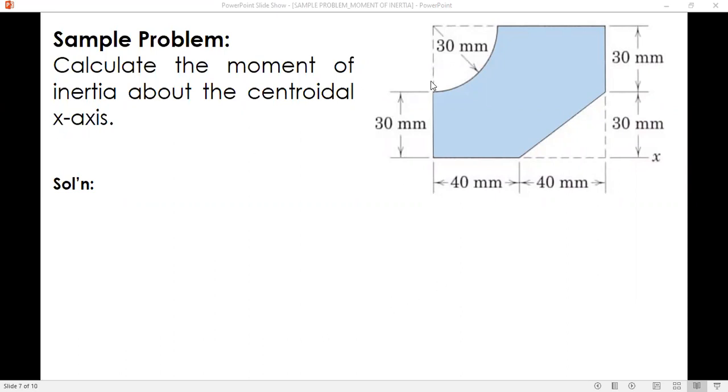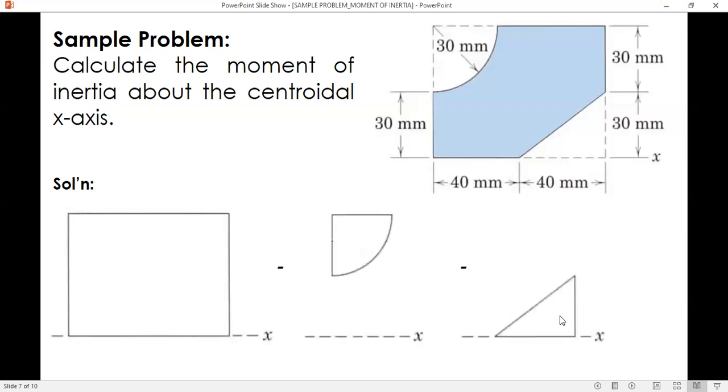So first, let's identify the number of elements for this composite figure. There are three. We have a rectangle minus a quarter of a circle and then minus a right triangle. So this is our element number one, two, and then three.